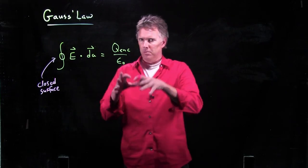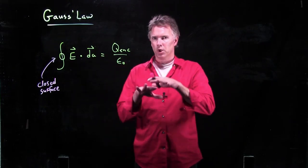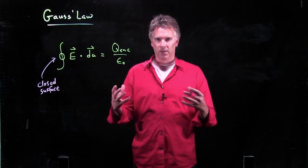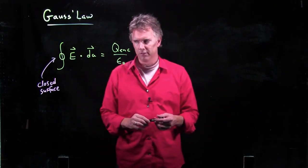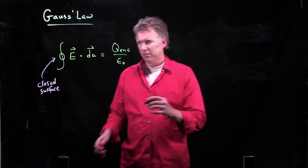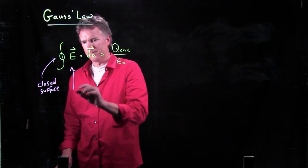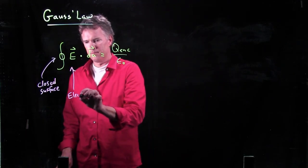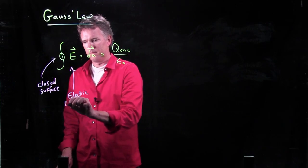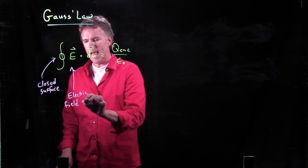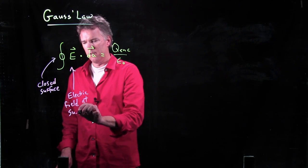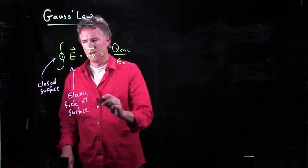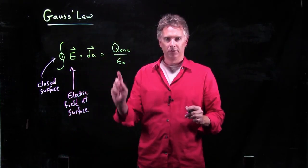That surface could be a sphere, it could be a cube, it could be a cylindrical surface, but it has to be a closed surface. E, of course, is the electric field, but it is the electric field at the surface of that closed surface.